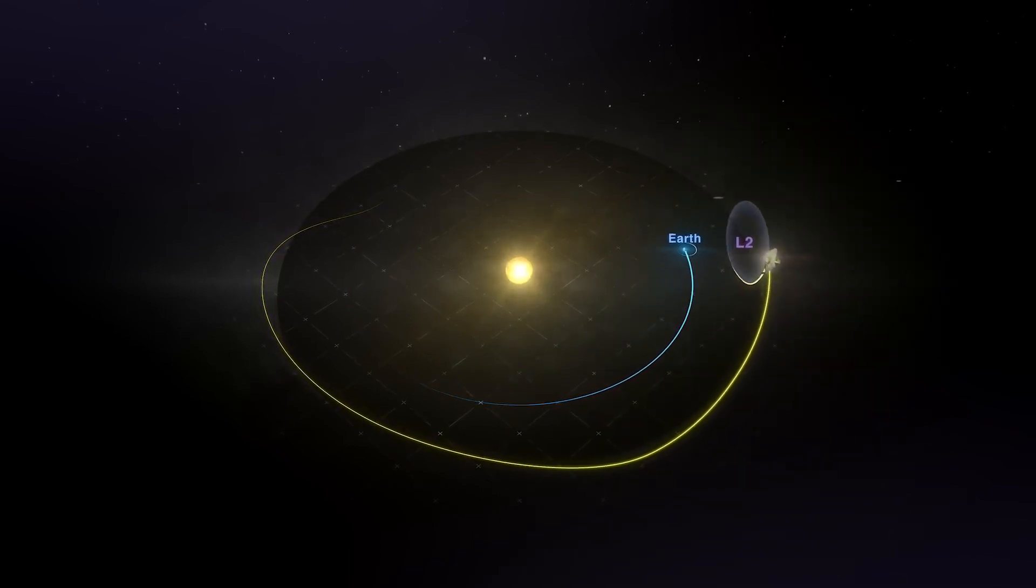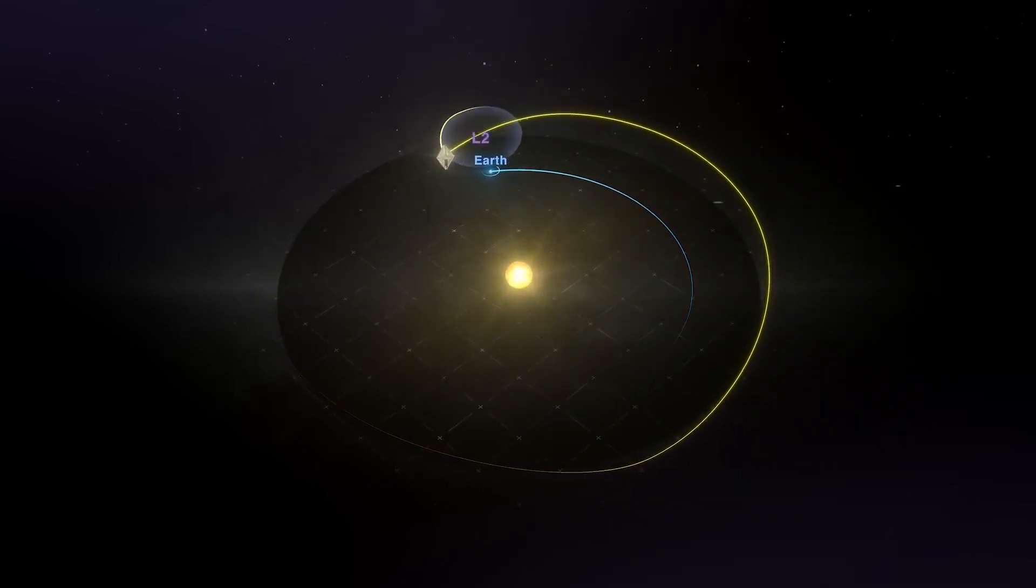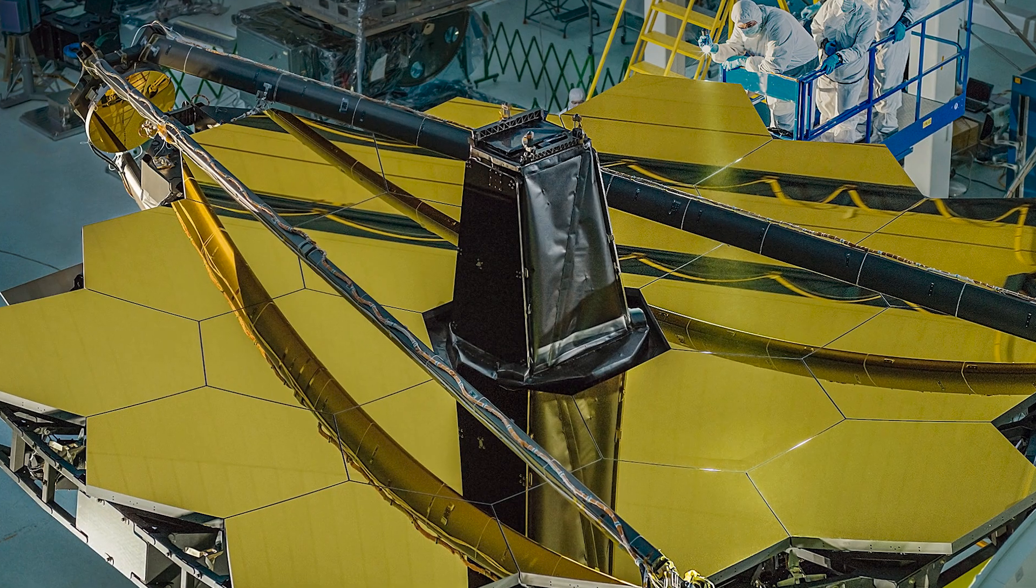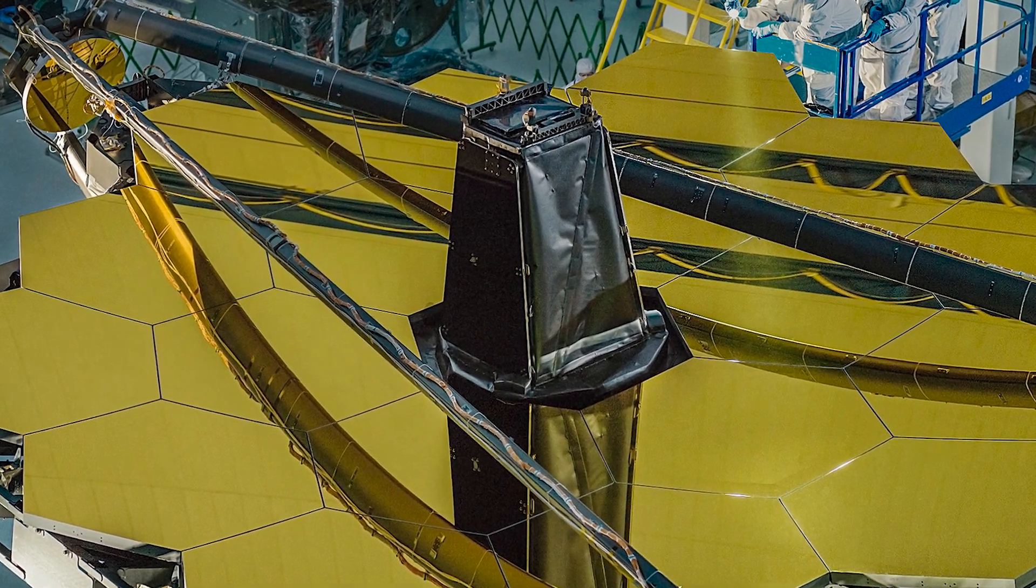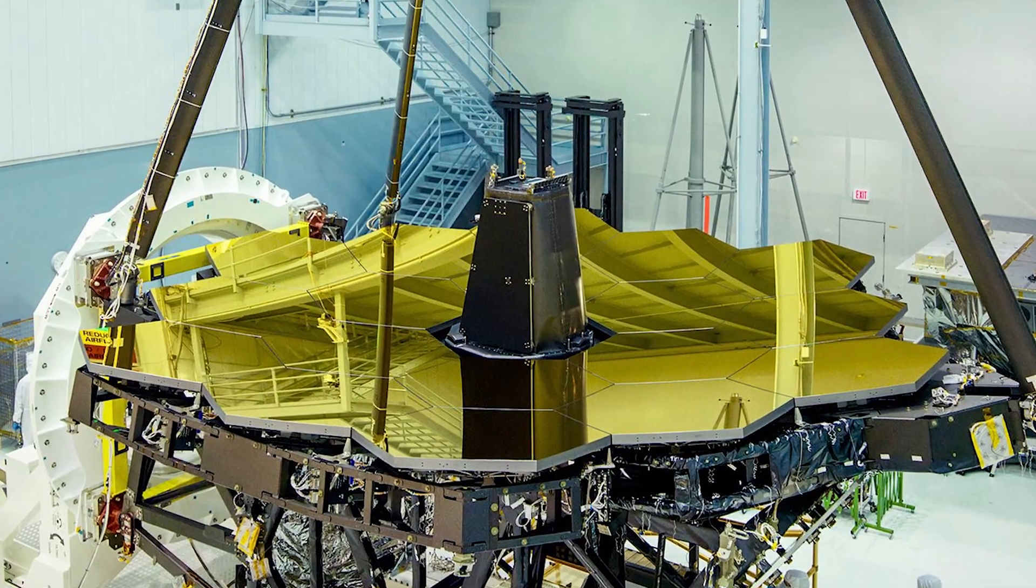From its orbiting position around the Lagrange point, one million miles from Earth, Webb uses its 6.5-meter segmented primary mirror to capture infrared light.